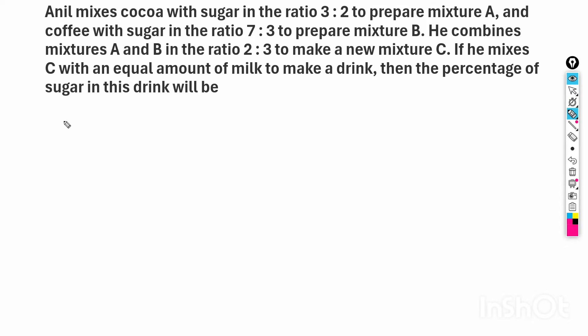What is given in this situation? Anil is mixing cocoa and sugar in a 3 to 2 ratio to prepare mixture A.